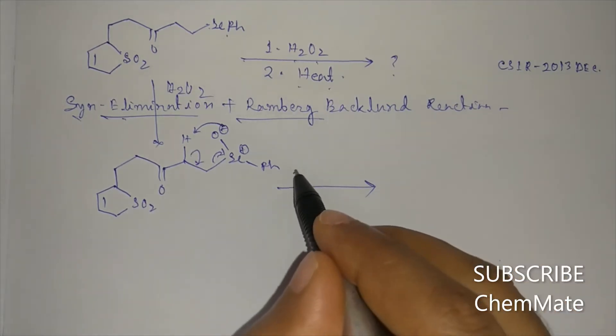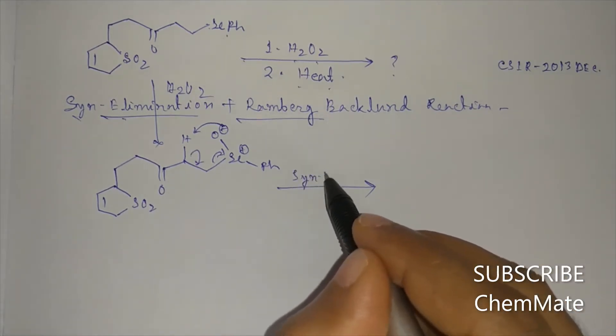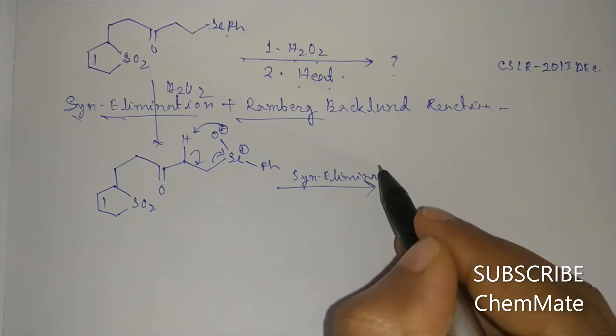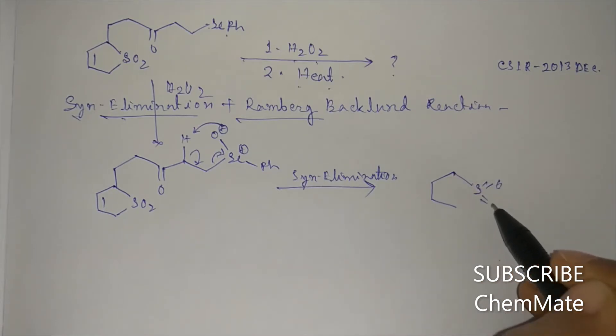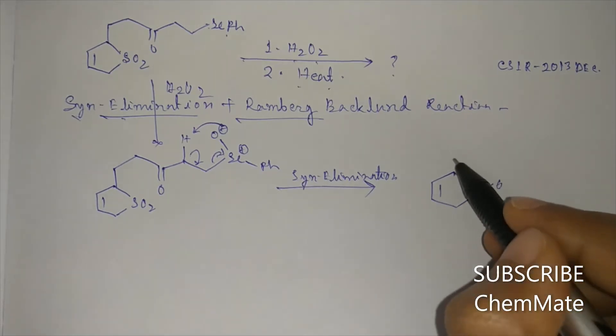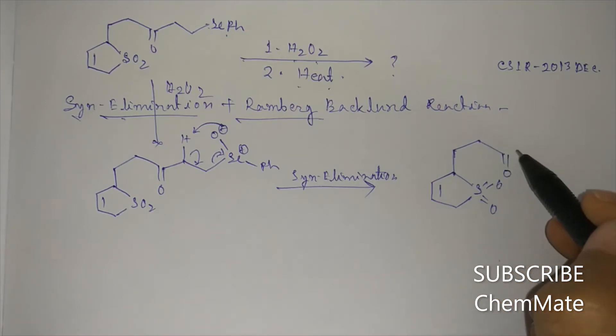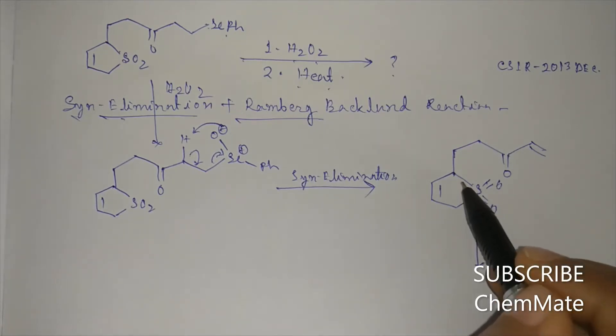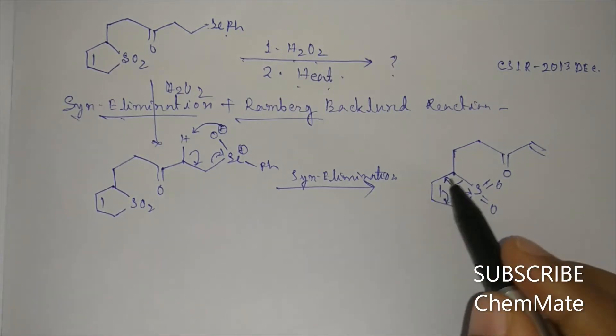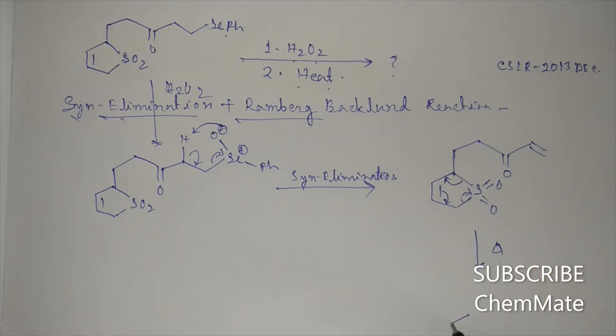So syn elimination gives the alpha beta unsaturated ketone. If it is heated, Ramburg-Baklund reaction will occur. That means here one SO2 group will eliminate and it will be converted into a diyne.